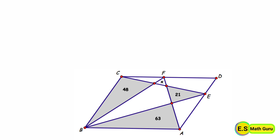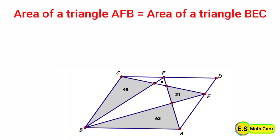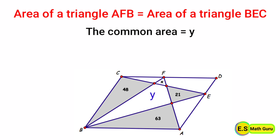By equating these two equations, we get the area of triangle AFB is equal to the area of triangle BEC. Dear friends, from the figure, these two triangles have some common area. Let us consider it as Y. From the figure, area of triangle AFB equals X plus Y plus 63, and area of triangle BEC equals 48 plus Y plus 21.